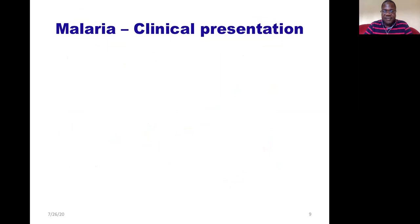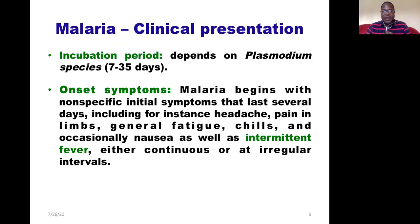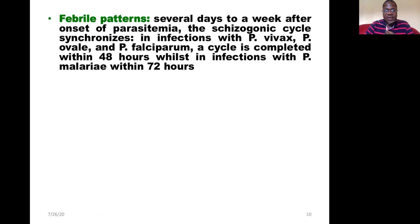In terms of clinical presentation, the incubation period depends on the species of Plasmodium but generally varies between 7 to 35 days. Malaria begins with non-specific, flu-like symptoms: headache, pain, general fatigue, and chills. Occasionally the patient can develop nausea. The patient then develops the famous intermittent fever — a fever with an intermittent pattern.